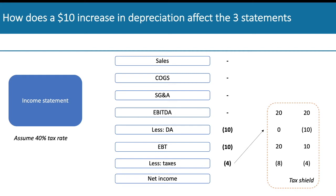So you would end up with a net income of minus six. Despite depreciation going up by 10, your net income has only dropped by six.